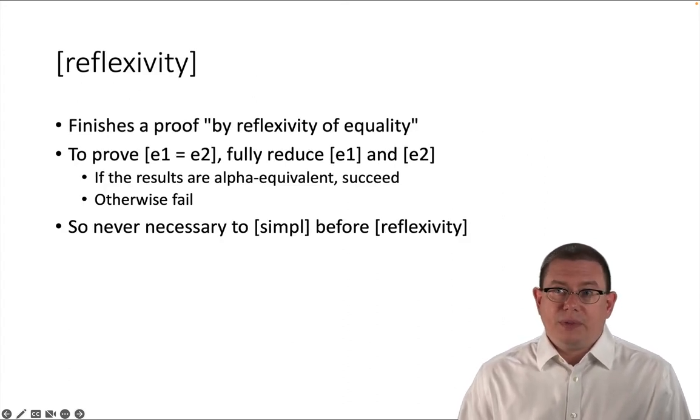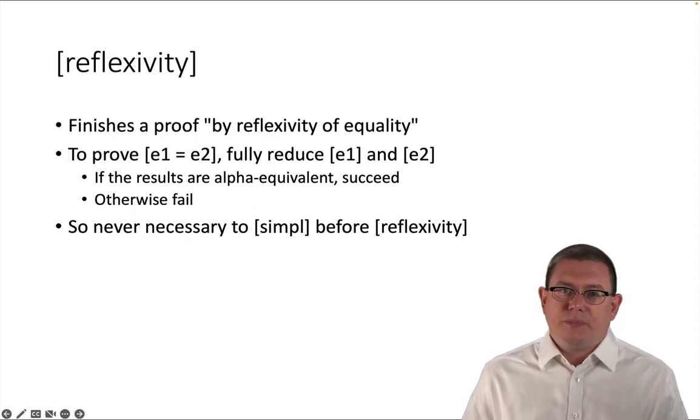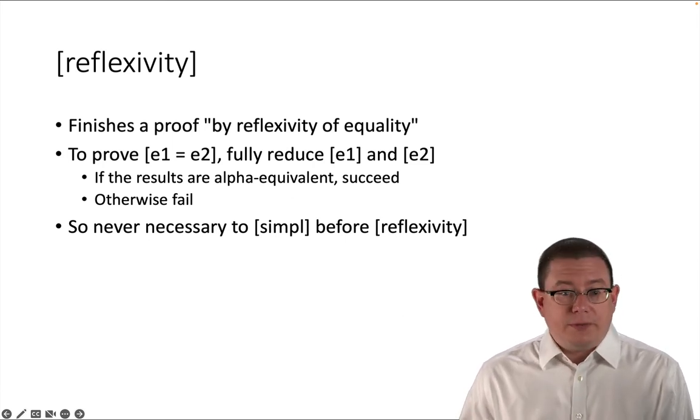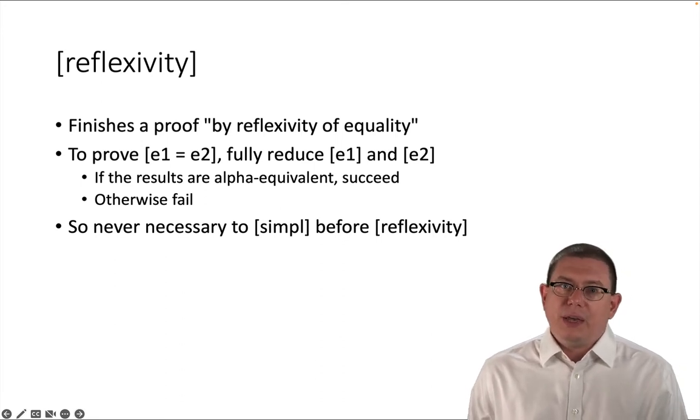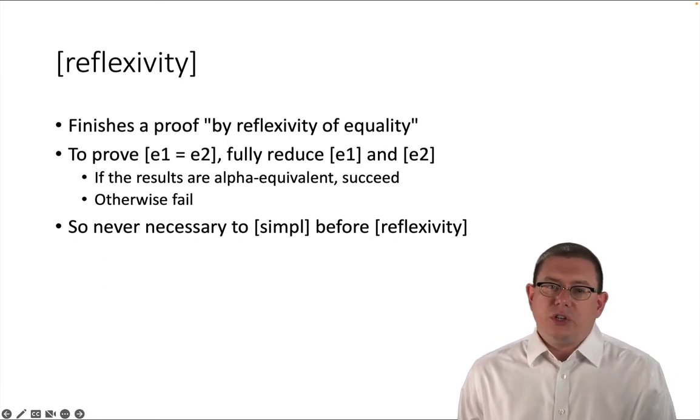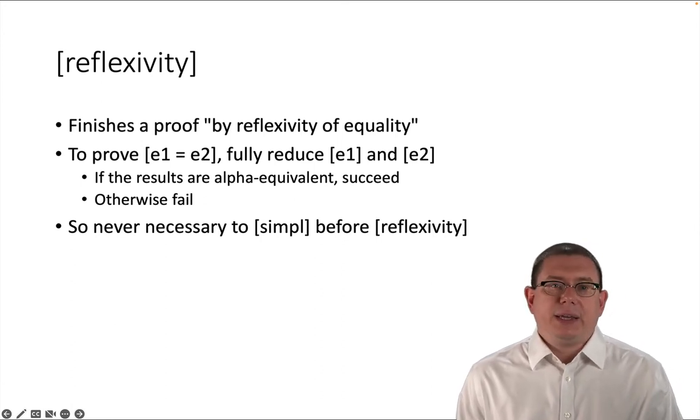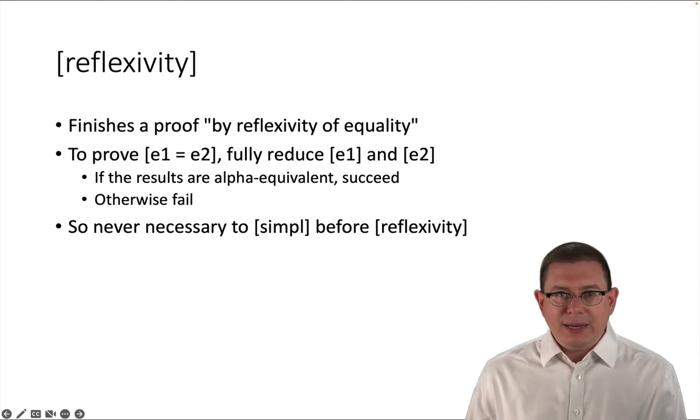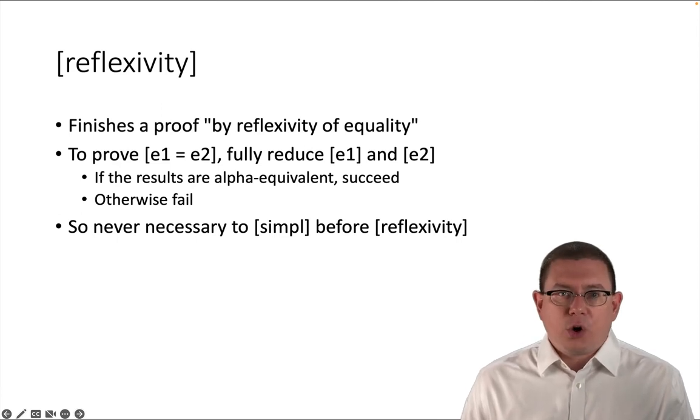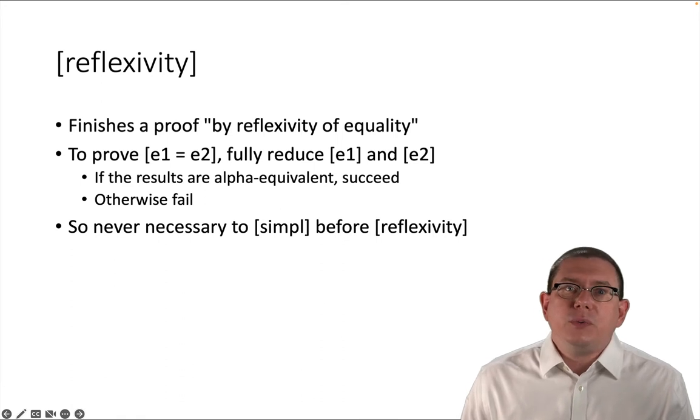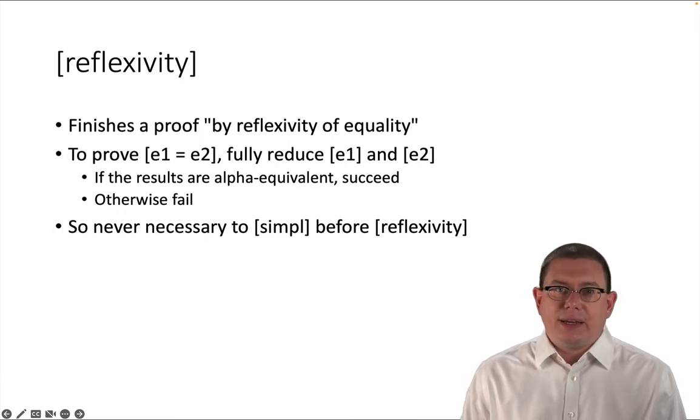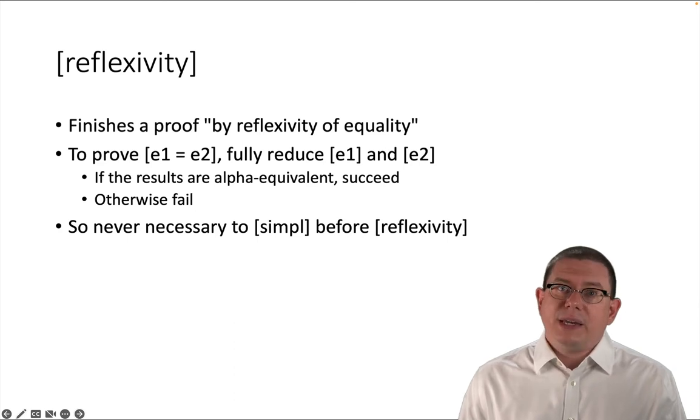We've also talked about reflexivity already. And we've seen sometimes that it seems like it overlaps with simple. So what is reflexivity doing? I can finally explain that to you. Reflexivity is, of course, trying to finish a proof by reflexivity of equality, that notion of equals being reflexive. And what it's actually doing is if you want to prove that E1 equals E2 and you use the reflexivity tactic, reflexivity as a tactic is going to fully reduce E1 and E2. It's going to fully compute with them like CBV would do. And then it's going to check whether the results are alpha equivalent.